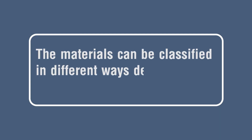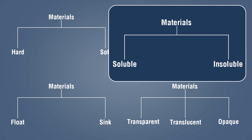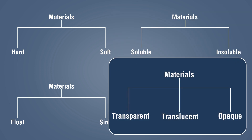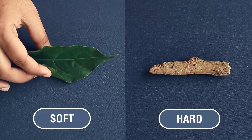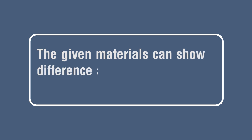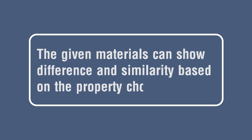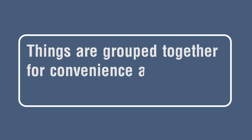Observation: materials can be classified in different ways depending on their features such as hardness, floats in water, solubility in water, and transparency. Notice that both wood and leaf float in water, but the leaf is soft while wood is hard — meaning materials can show both differences and similarities depending on the property chosen. Conclusion: every material has some features known as its properties. Materials show similarities and differences in their properties, and things are grouped together for convenience and to study those properties.